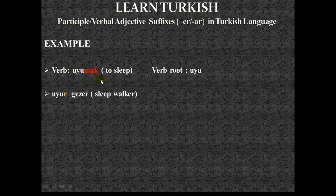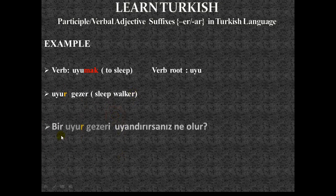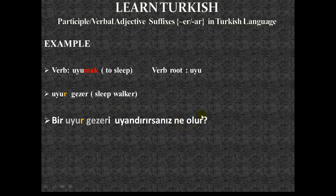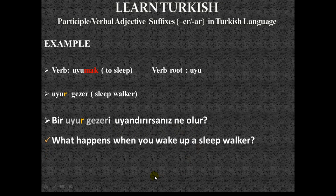The next verb is 'uyumak,' to sleep. The verb root is 'uyu,' so the derived verbal adjective is 'uyur.' Since the last vowel letter of the verb root is 'u' and the verb root ends with a vowel letter, we just use the letter -r instead of -er or -ar and their derivatives. 'Uyur gezer' means sleepwalker. Example: 'Bir uyur gezeri uyandırırsanız ne olur?' — What happens when you wake up a sleepwalker?